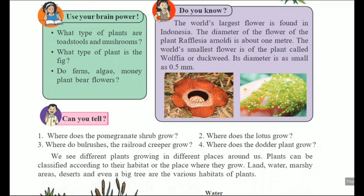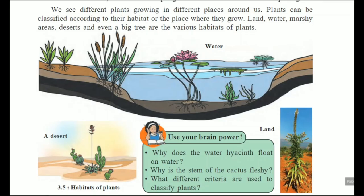We see different plants growing in different places around us — that is on land. After that, some aquatic plants grow in water only, therefore they are called aquatic plants. So according to their living place, plants can be classified according to their habitat — that is the place where they live or grow.